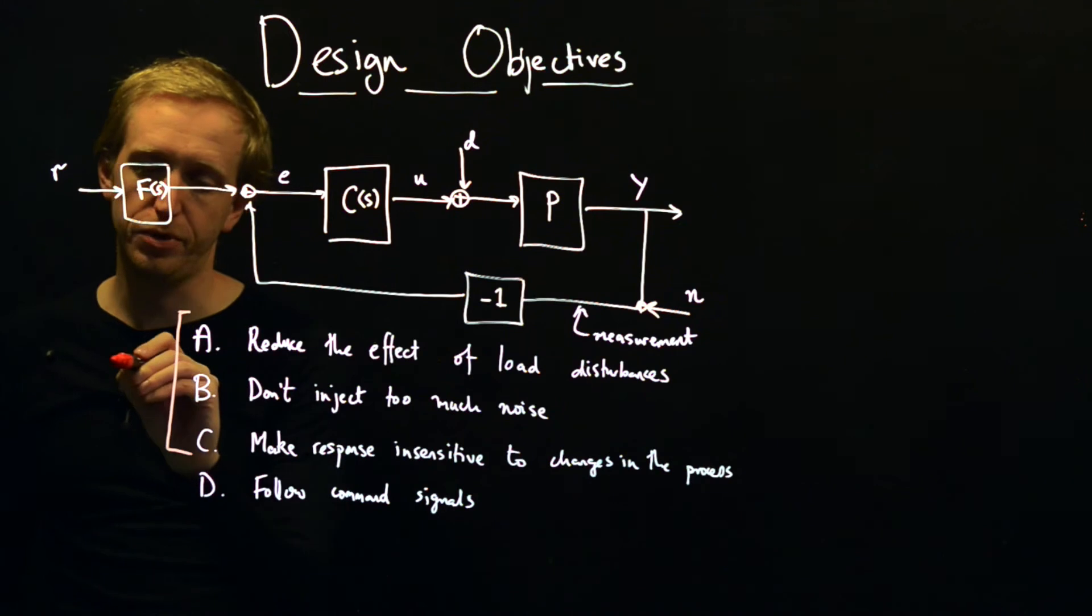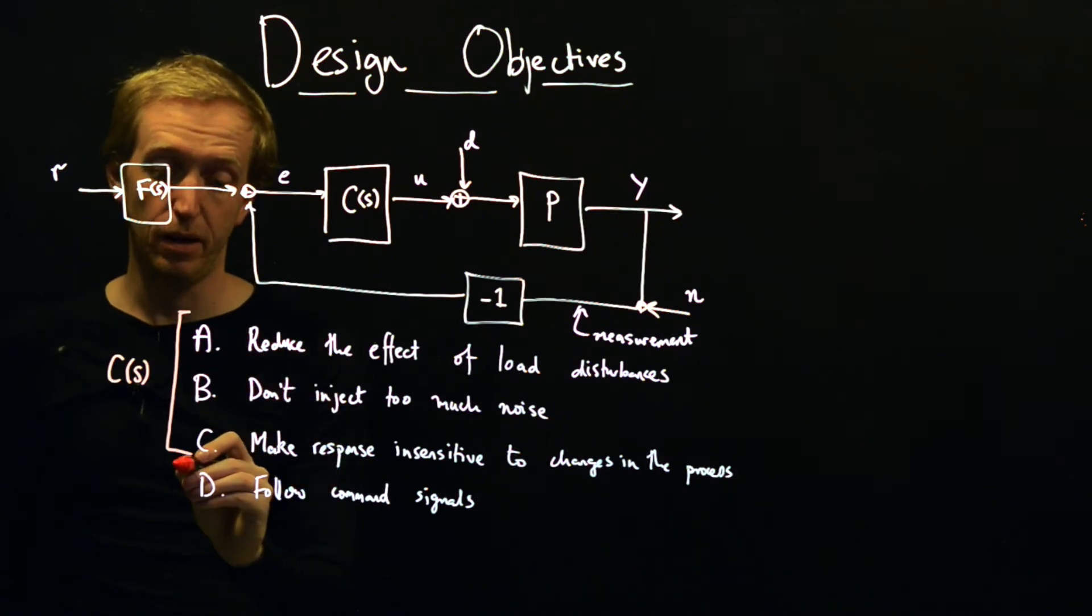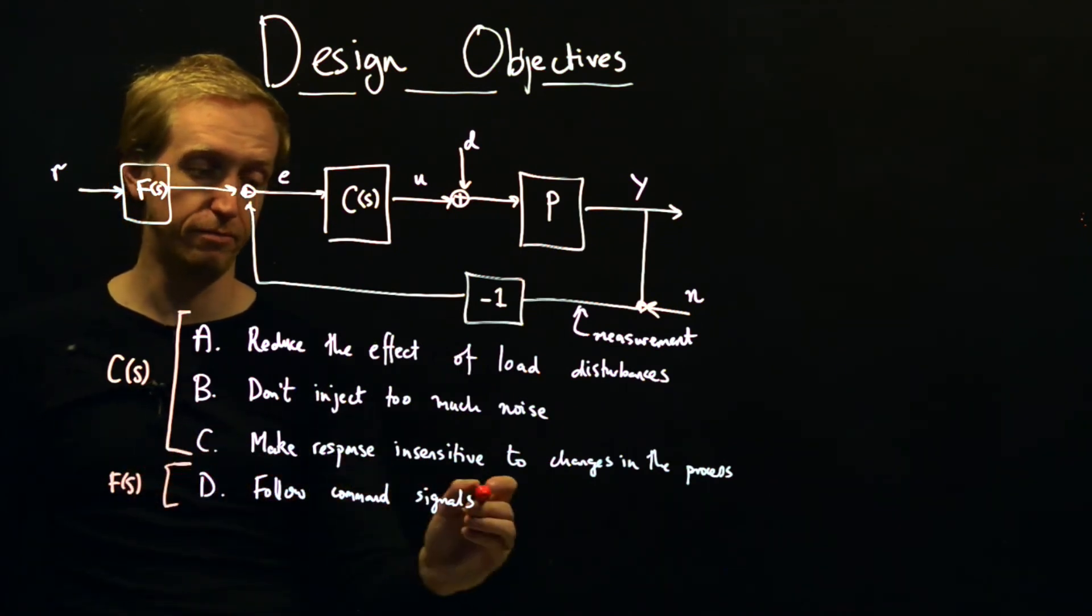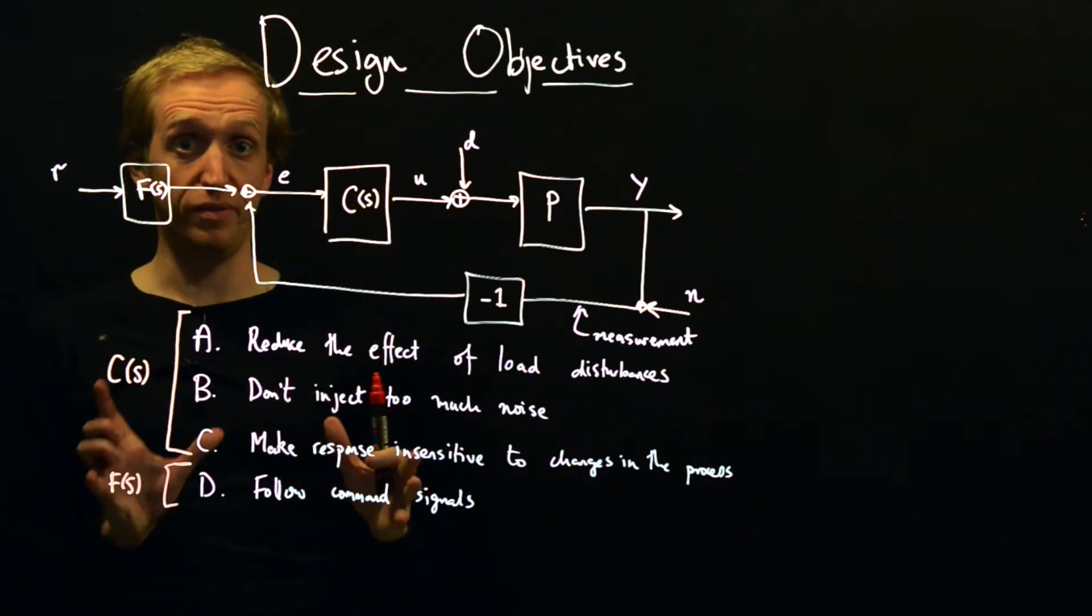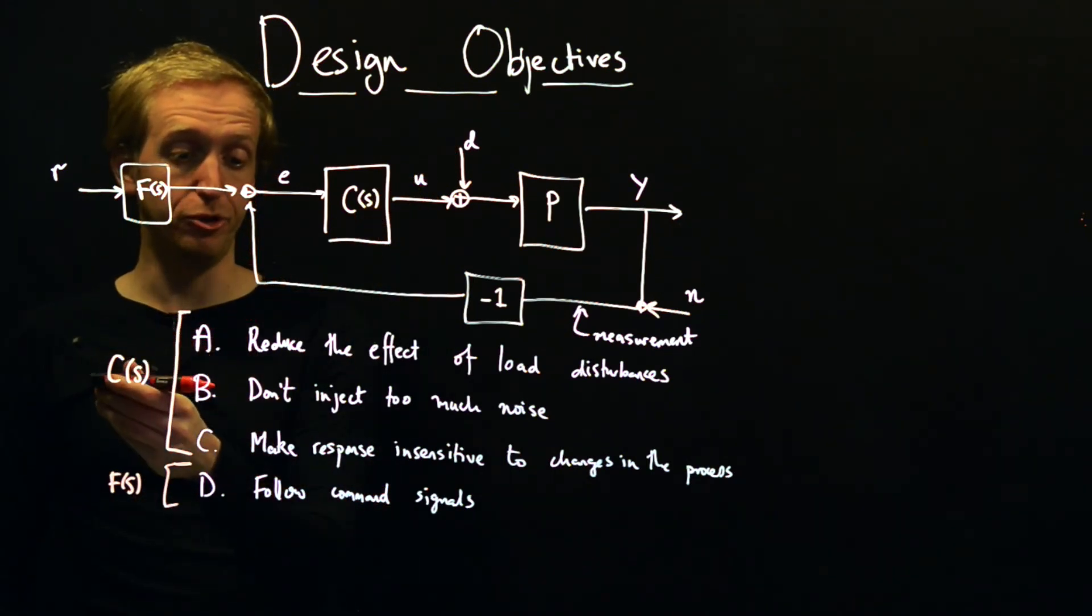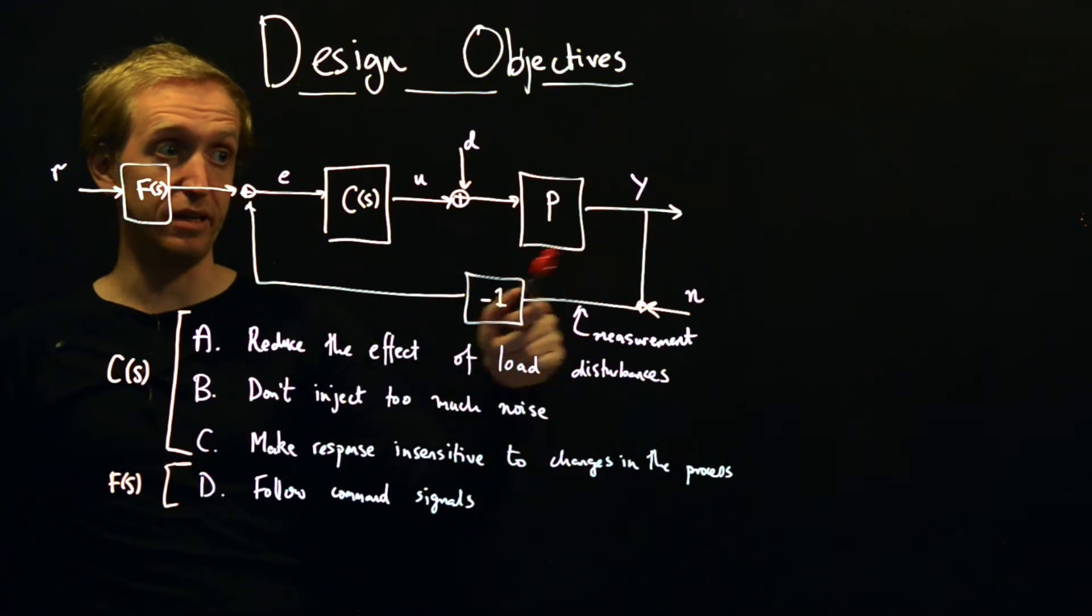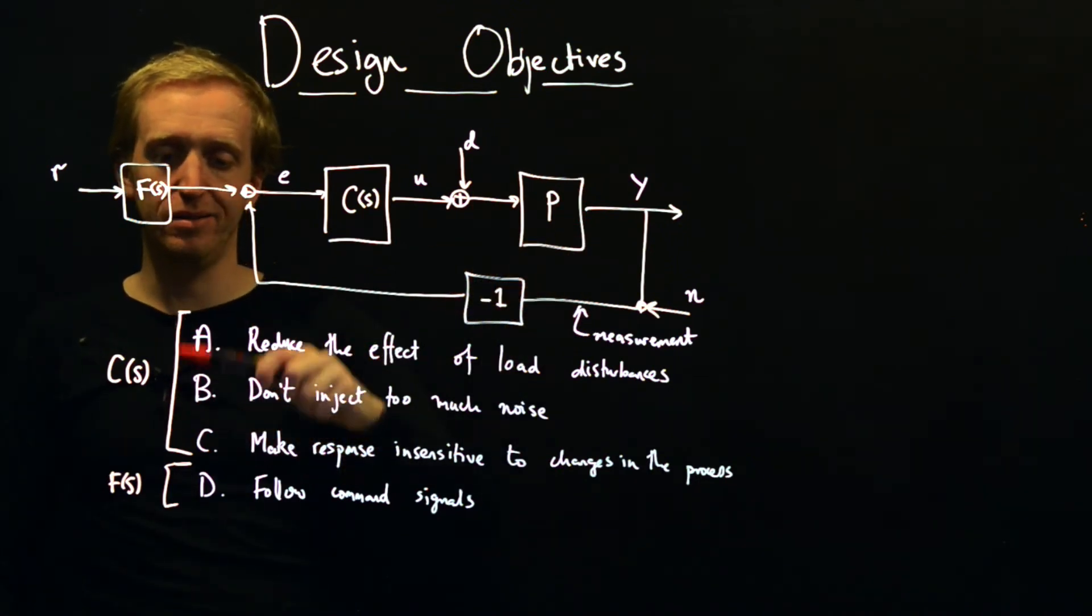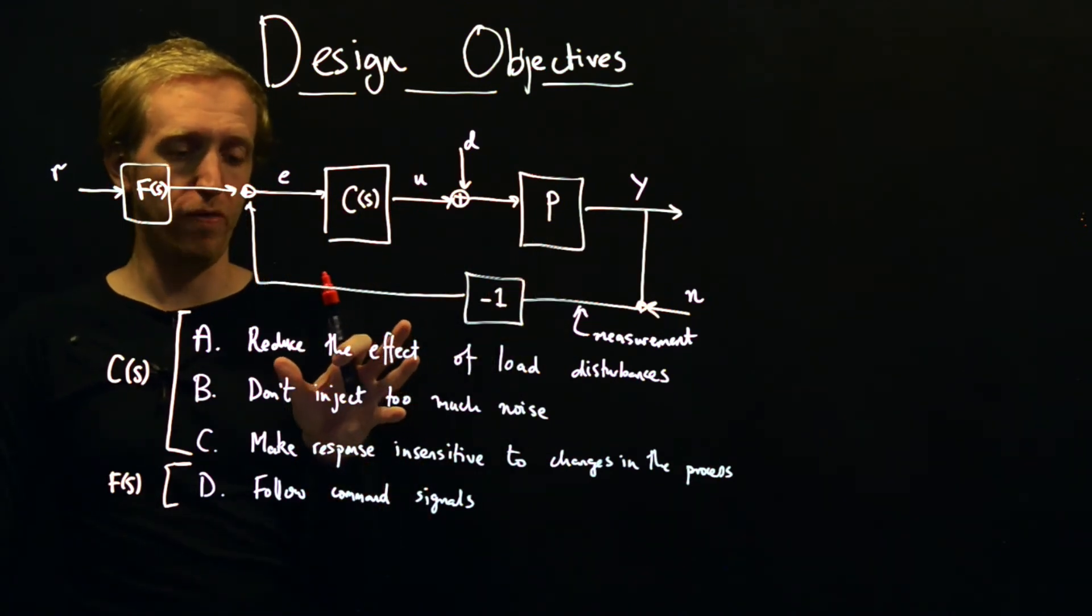And what do you typically use to do what? Typically, you use the controller C of S to deal with objectives A, B and C. And then you get this feed-forward compensator F of S to sort of finish things off. So we use our feedback controller to really handle all of the uncertainty in the system. We want to reduce the effect of uncertainty from load disturbances, reduce the effect of uncertainty from measurement noise, reduce the effect of uncertainty in what the plant actually does. What the input-output behavior of the plant actually is. So feedback is used to deal with all of the uncertainty in the system.